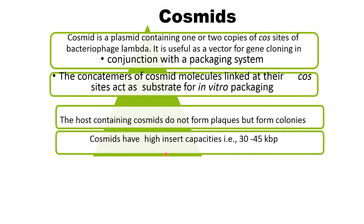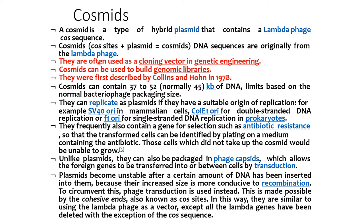Cosmids have high insert capacity, that is about 30 to 45 KB. They are often used as a cloning vector in genetic engineering. Cosmids can be used to build genomic libraries. They were first discovered by Collins and Hohn in 1978.